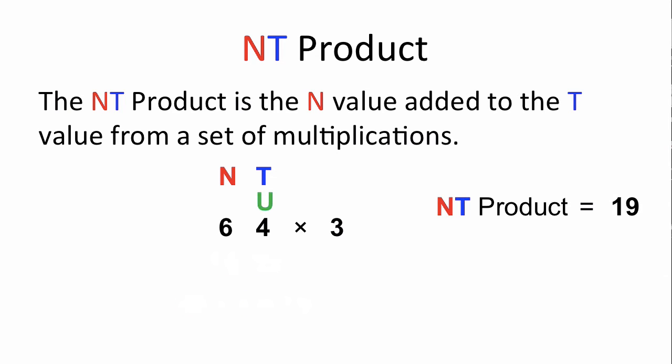Now on top of this we also have a U value, and so for the 3 times 4 is 12, the U value in this case is 2.